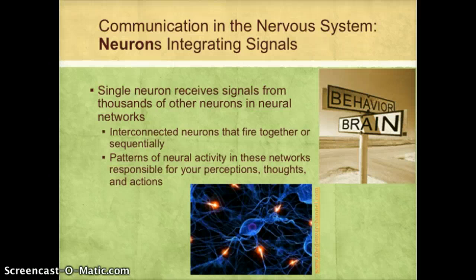Other neural networks have neurons that fire sequentially — so first this, then that, then that, and so on as the signal travels. It's the activity in these neural networks that is responsible for just about every function in your body, including your perceptions or views of the world, your thoughts, and your actions.